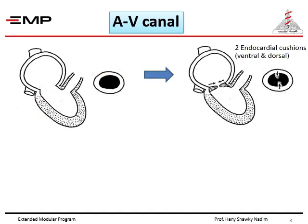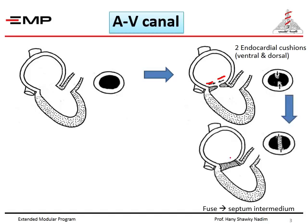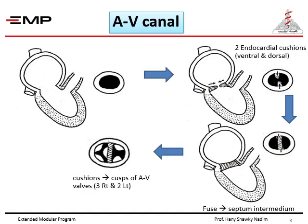What happens next is the appearance of two endocardial cushions growing from the ventral and the dorsal walls of the AV canal, called ventral and dorsal endocardial cushions. Both unite in the middle forming one septum across the cavity of the AV canal, called septum intermedium. Now the AV canal is divided into two halves — on the right side this is the tricuspid orifice, and on the left side this is the mitral orifice.